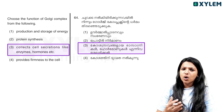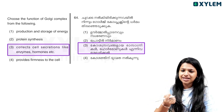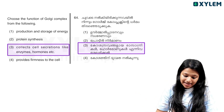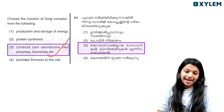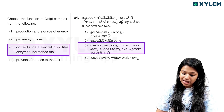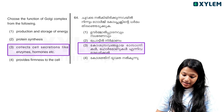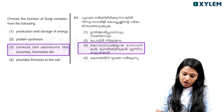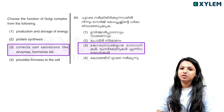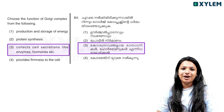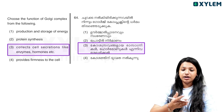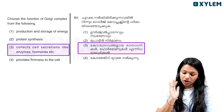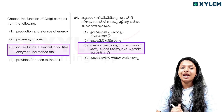The Golgi Complex uses vesicles. It is involved in collecting cell secretions like enzymes, hormones, etc. It also deals with nutrients and hormones, including commerce and other nutrients.